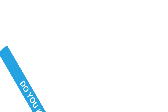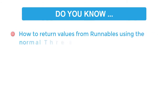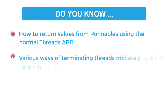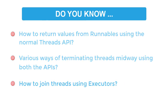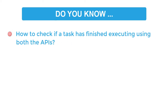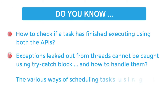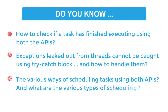Let me ask you: do you know how to return values from tasks using the normal Threads API using just the runnables? The various ways for terminating threads midway using both the APIs? How to join threads using Executors? How to check if a task has finished executing using both the APIs? Do you know that you cannot catch stray exceptions leaked out from a thread by using a try-catch block, and how to handle such exceptions? Do you know the various ways of scheduling tasks using both the APIs, and what are the various types of scheduling?